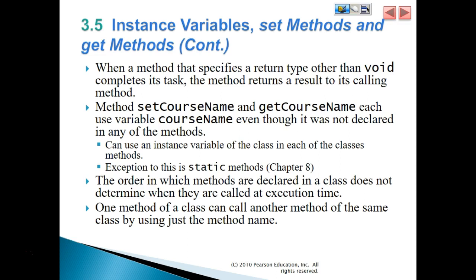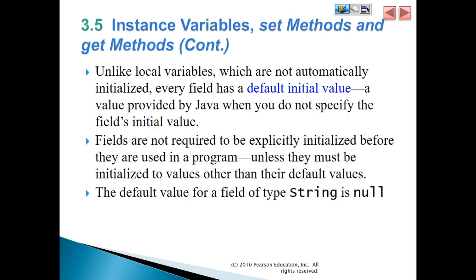The order in which methods are declared in a class does not determine when they are called at execution time. One method of a class can call another method of the same class by just using the method name. Unlike local variables which are not automatically initialized, every field has a default initial value — a value provided by Java when you do not specify that field's initial value. Fields are not required to be explicitly initialized before they are used in a program unless they must be initialized to values other than the default values. The default value of a field type String is null.